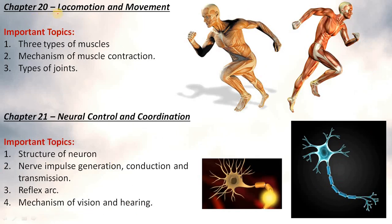Chapter 20 Locomotion and Movement important topics are three types of muscle, mechanism of muscle contraction, three types of joints. Important topics of Chapter 21 Neural Control and Coordination: structure of neuron, nerve impulse generation, conduction and transmission, reflex arc, mechanism of vision and hearing.